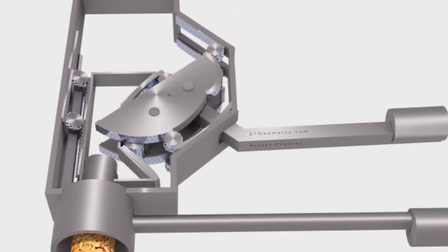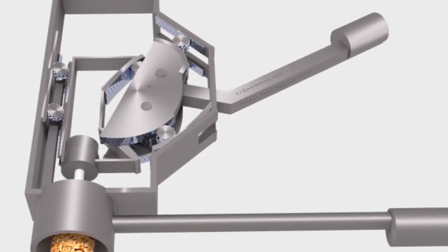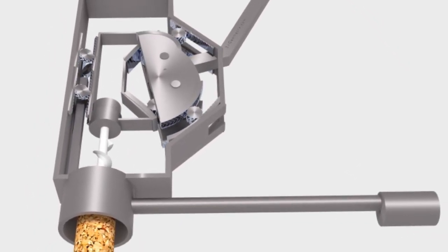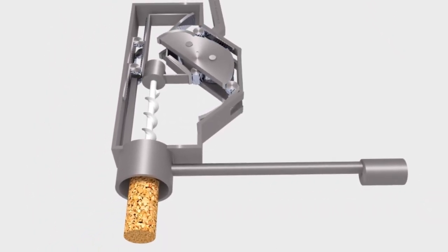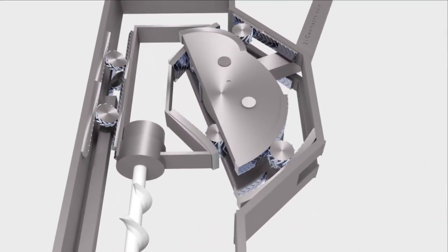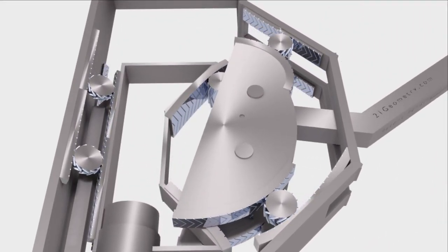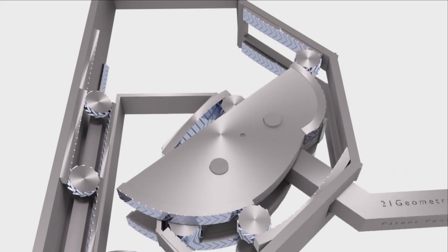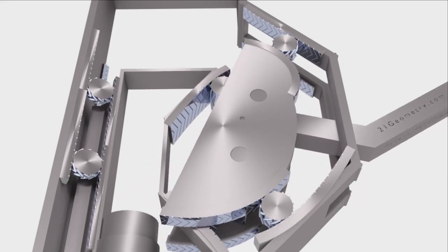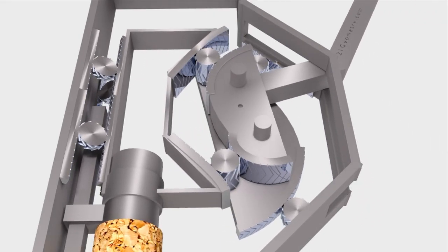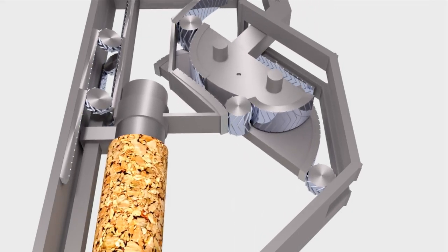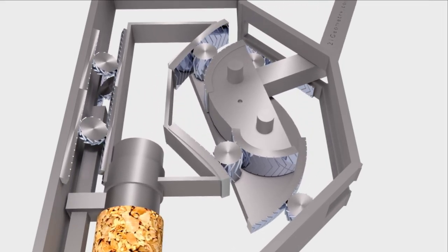You're seeing the redesign of a corkscrew using Roll's technology. Since we can support any motion, we can design a variable mechanical advantage. Since the forces are highest at the bottom, the mechanical advantage is three times higher there. You can expect a video covering the design aspects of the corkscrew on this channel.